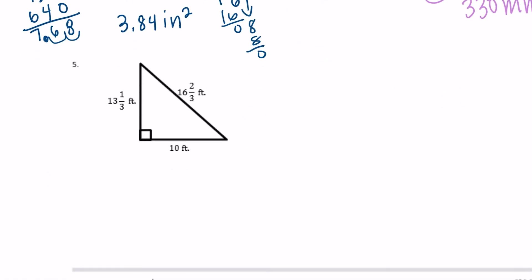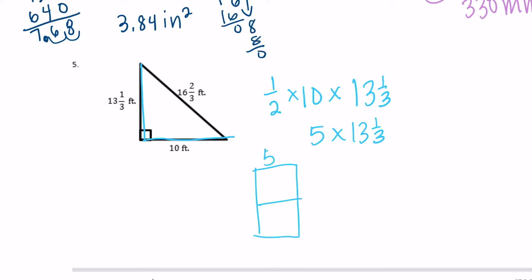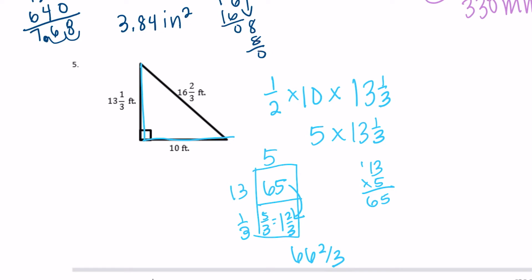Number 5 has fractions, so I'll use one half times base times height. One half of 10 is 5, times 13 and one-third. I'll use the box method: 5 times 13 is 65, and 5 times one-third is five-thirds, or 1 and two-thirds. Adding together: 65 plus 1 and two-thirds equals 66 and two-thirds. Our label is feet squared.